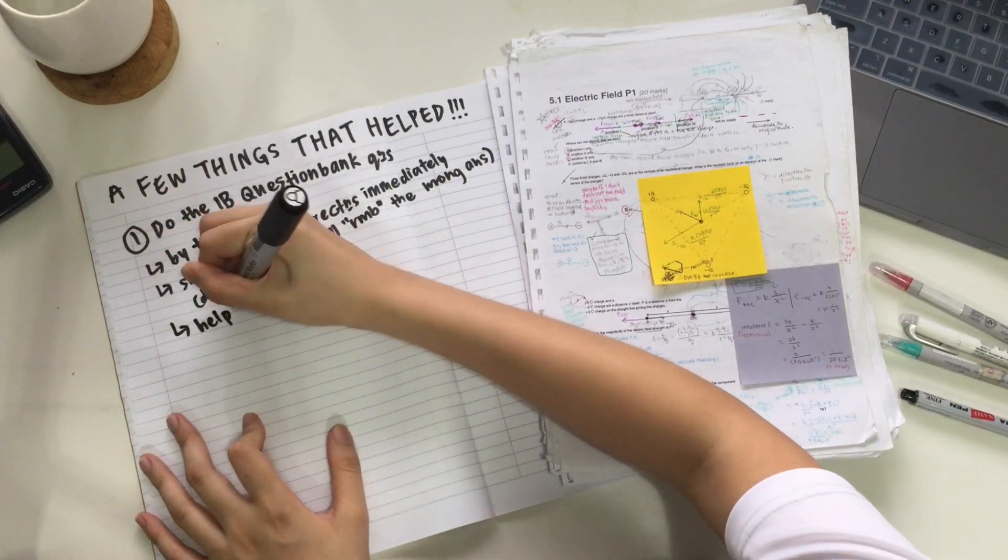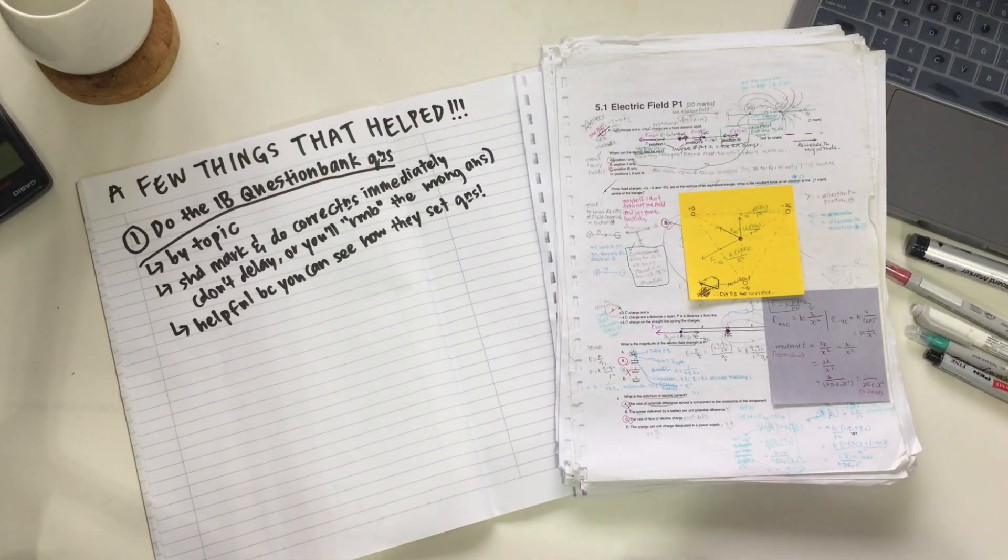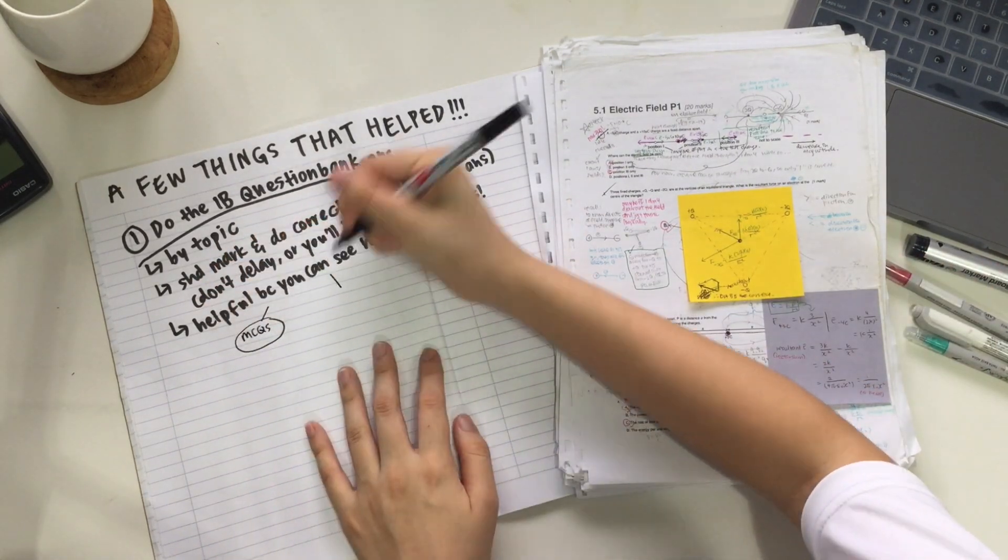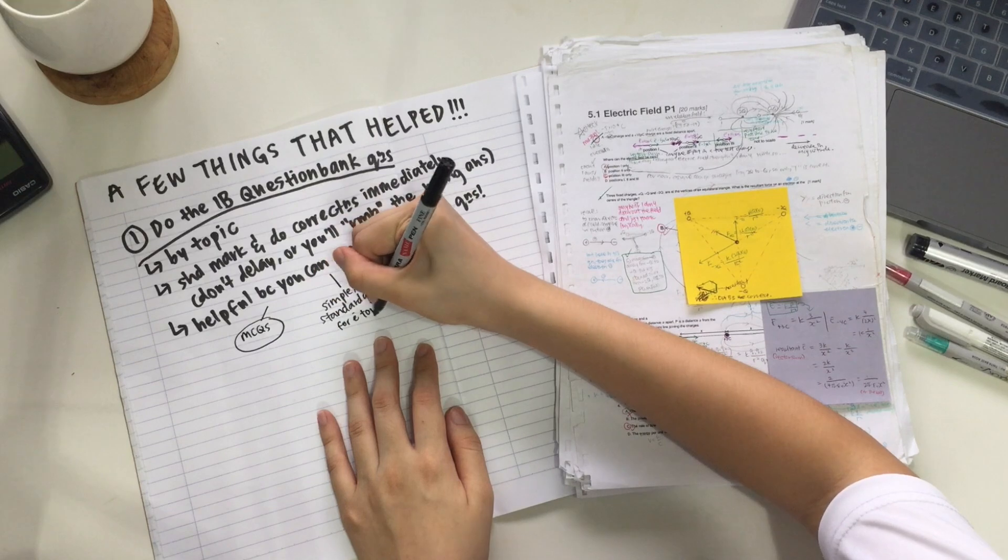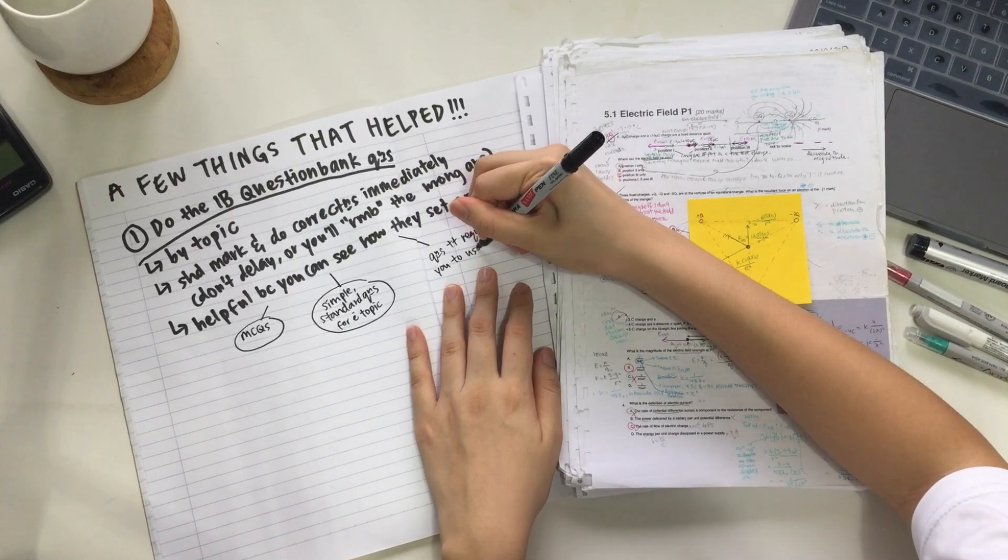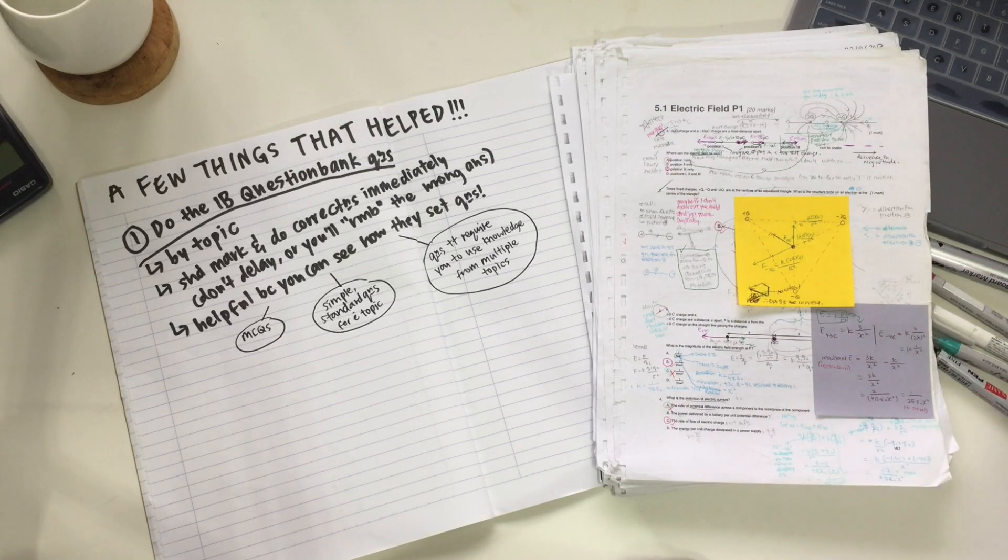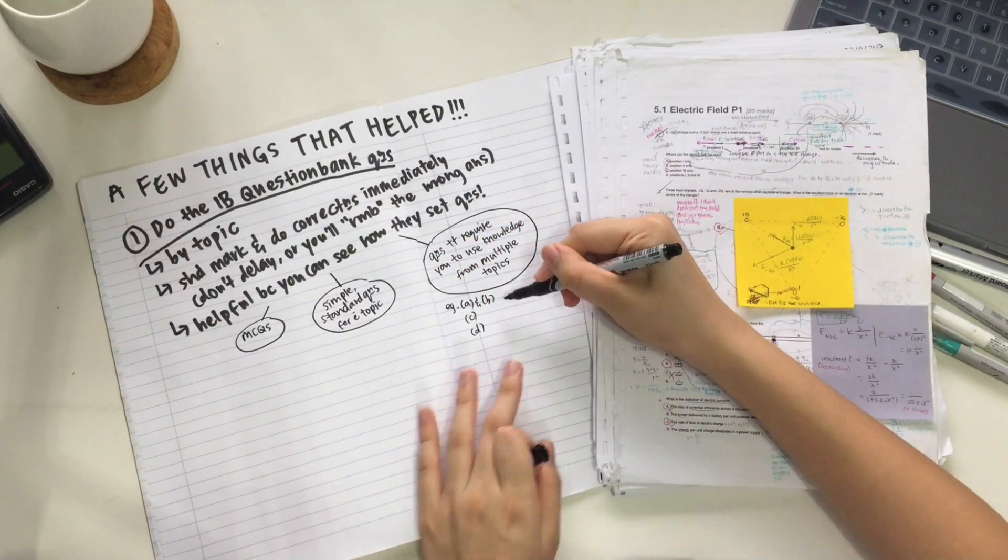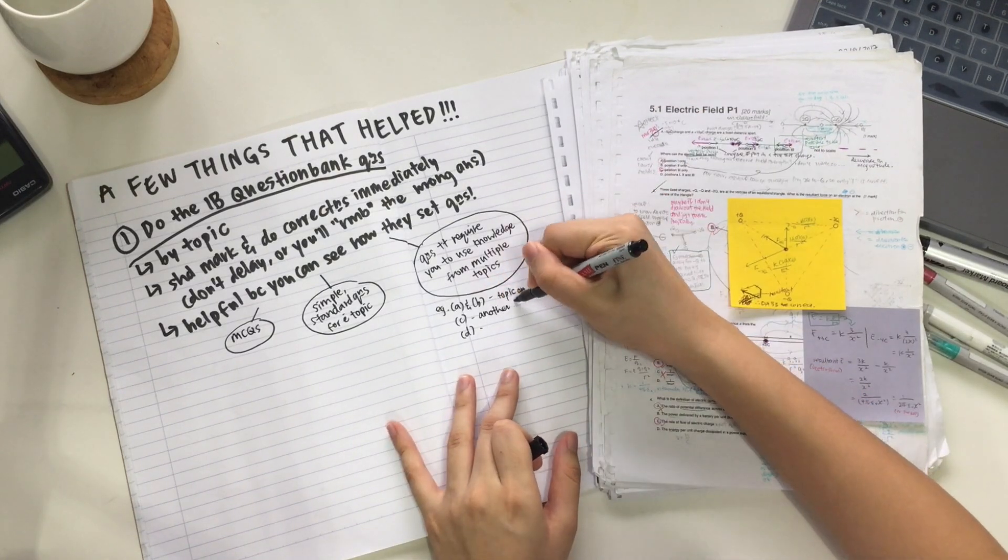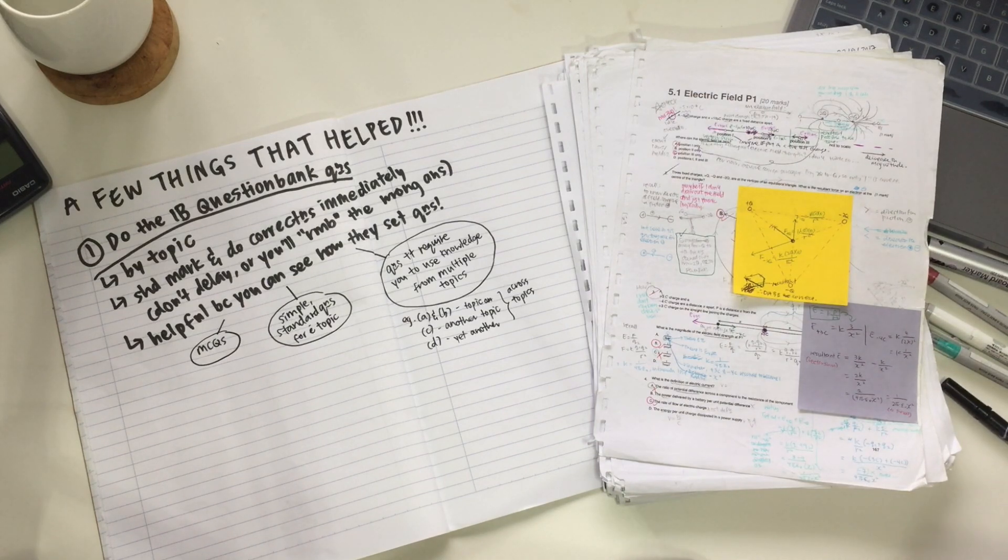I find the question bank questions very helpful because you can see the similarities in question types and how they vary the questions. There's the MCQs, the simpler standard questions for each topic, and the more complex questions that require you to use knowledge from multiple topics. These questions can be split into many parts, and different parts use different topics. They require you to equate formulas from across different topics to be flexible and apply them in multiple creative situations.